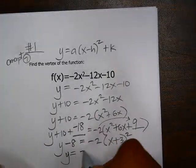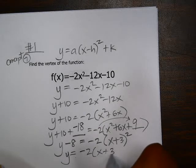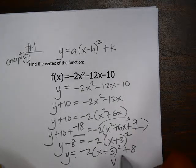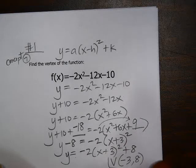So in graphing form, I get y equals negative 2, x plus 3 squared plus 8. So the vertex of this quadratic is at the point negative 3, 8.